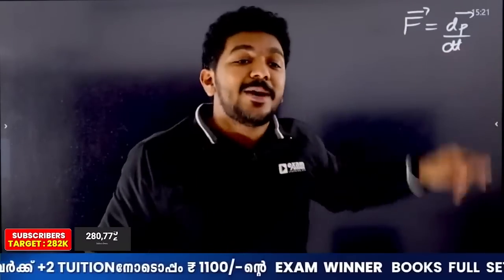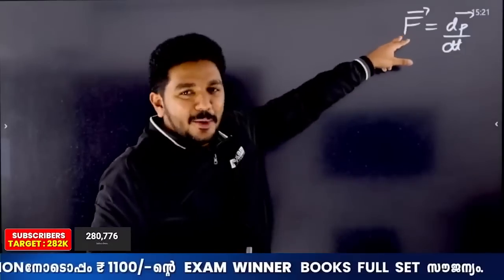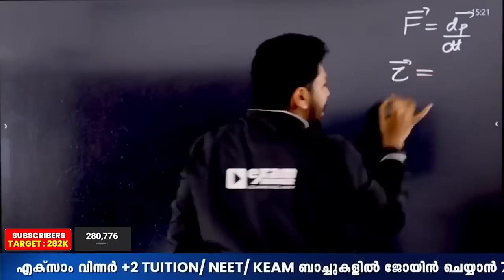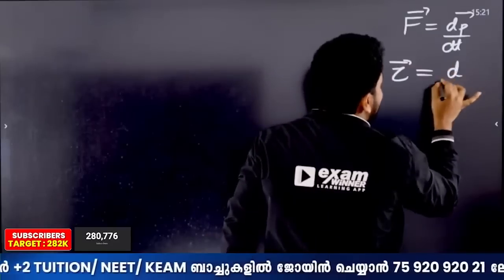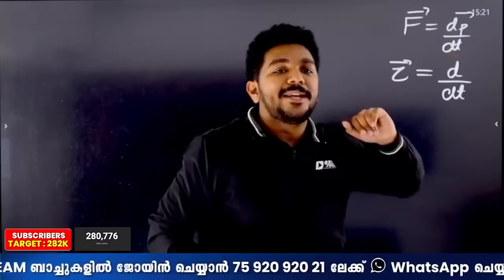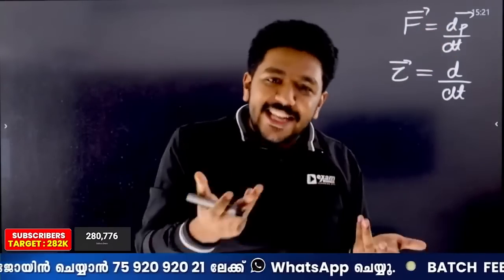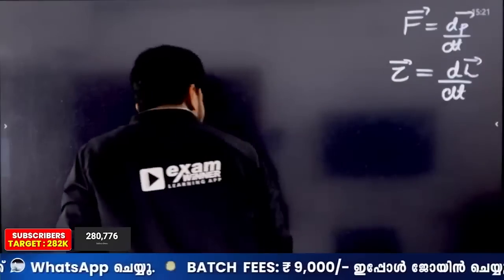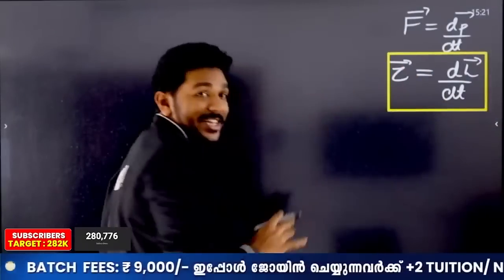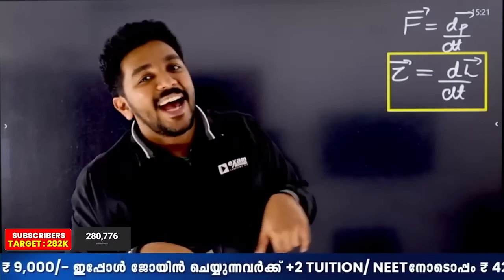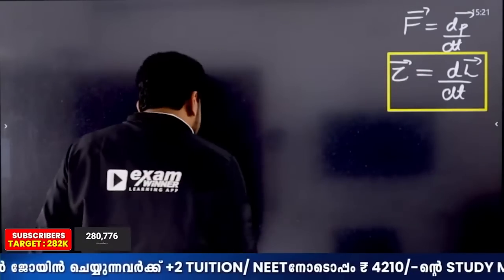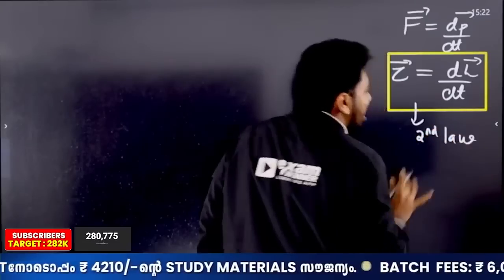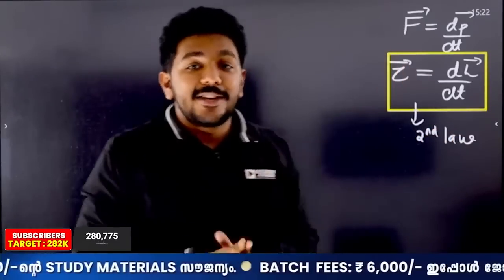What is the rotational motion equivalent of this equation? We replace force with torque. Torque is equal to d by dt. We replace linear momentum with angular momentum. Torque is equal to dL by dt — torque is equal to the rate of change of angular momentum. This is Newton's second law in rotational form.